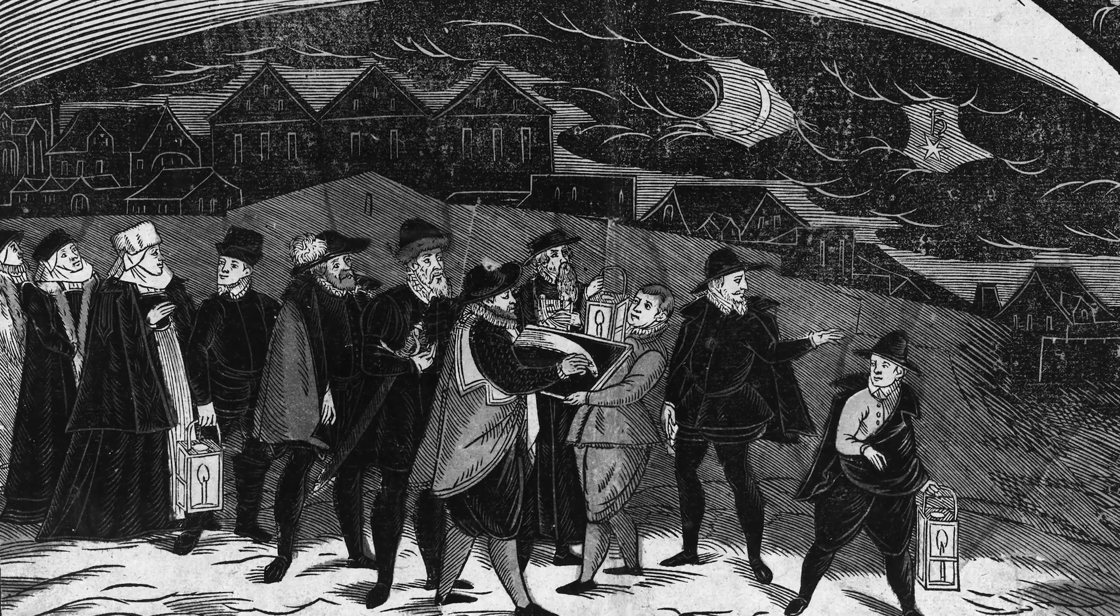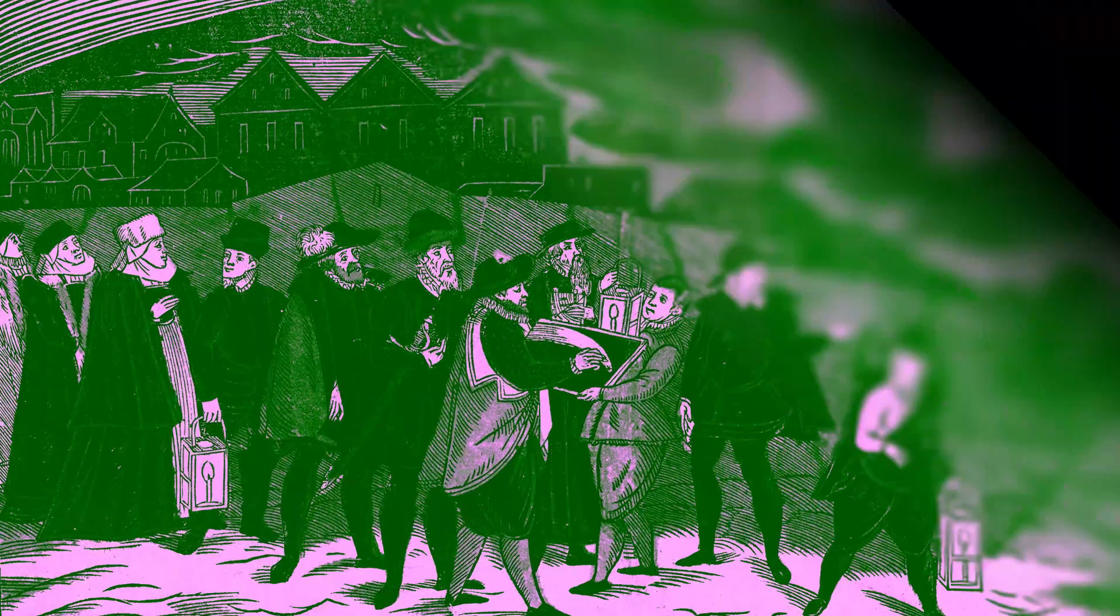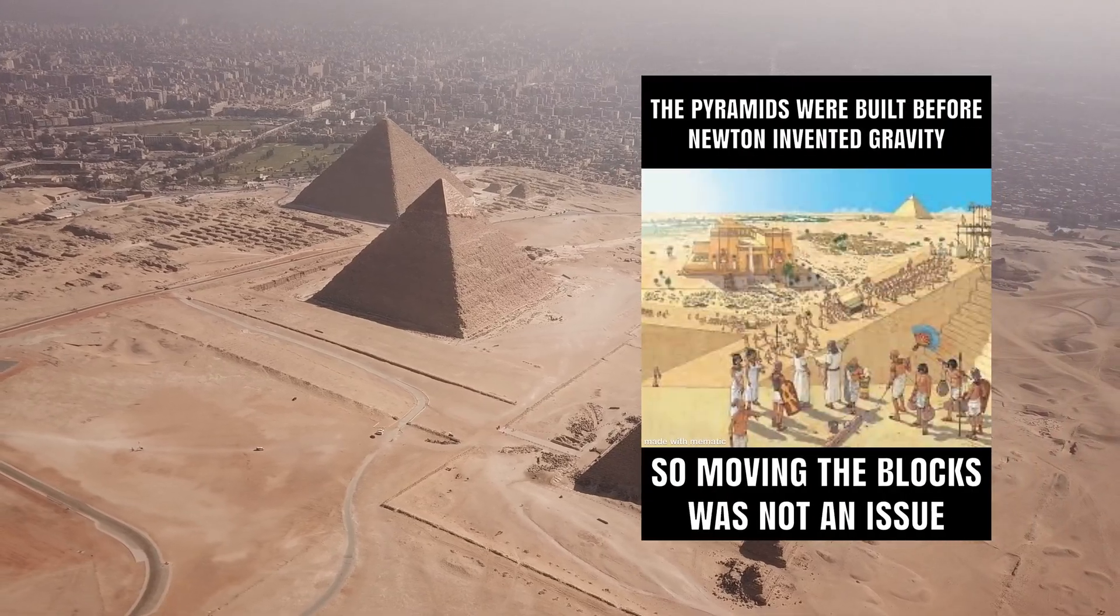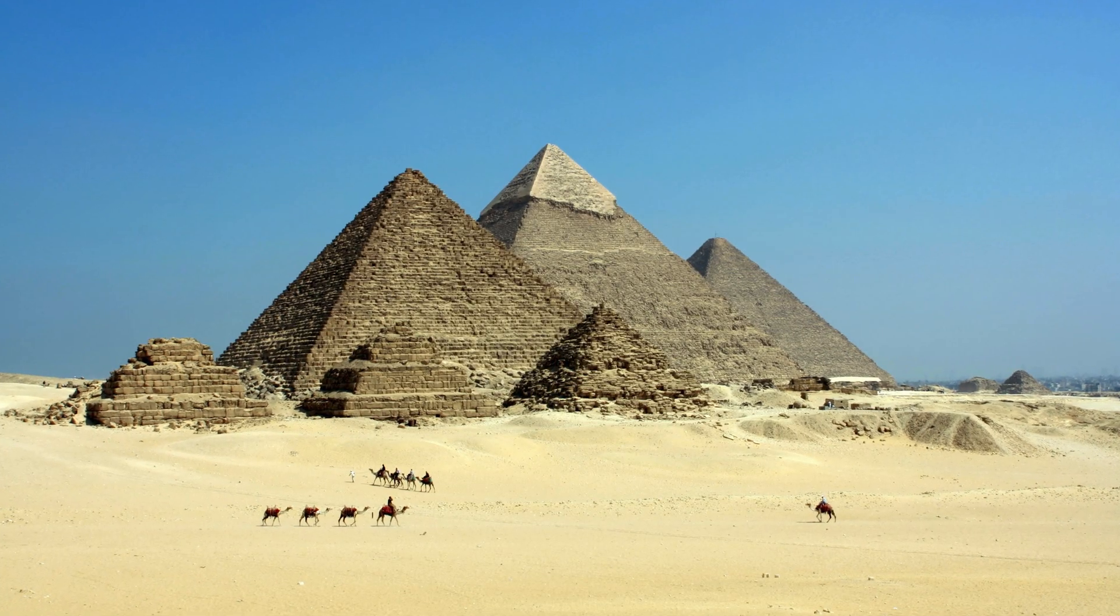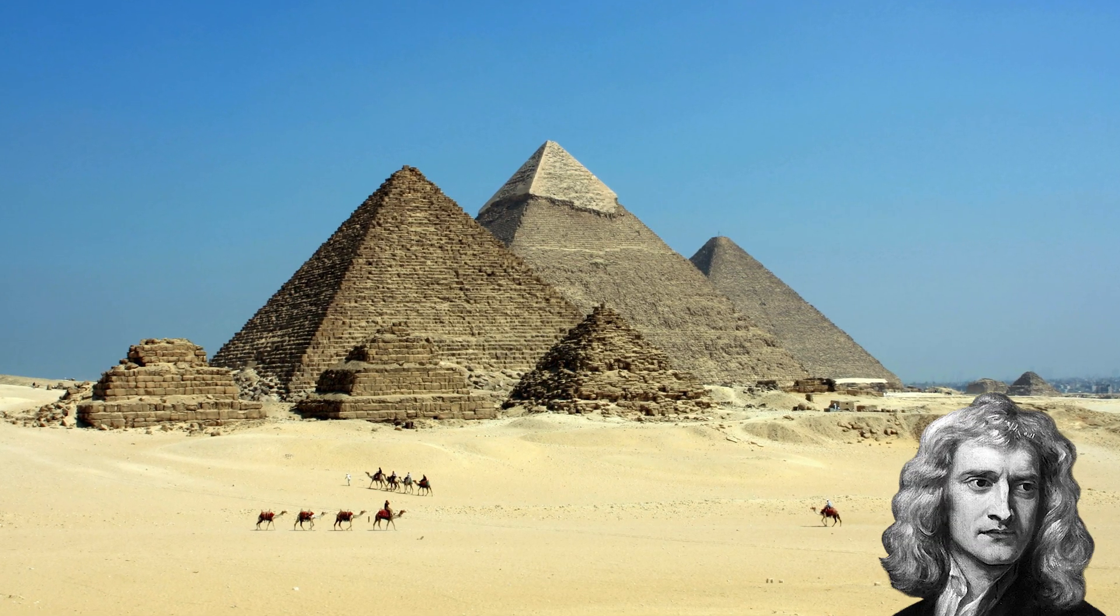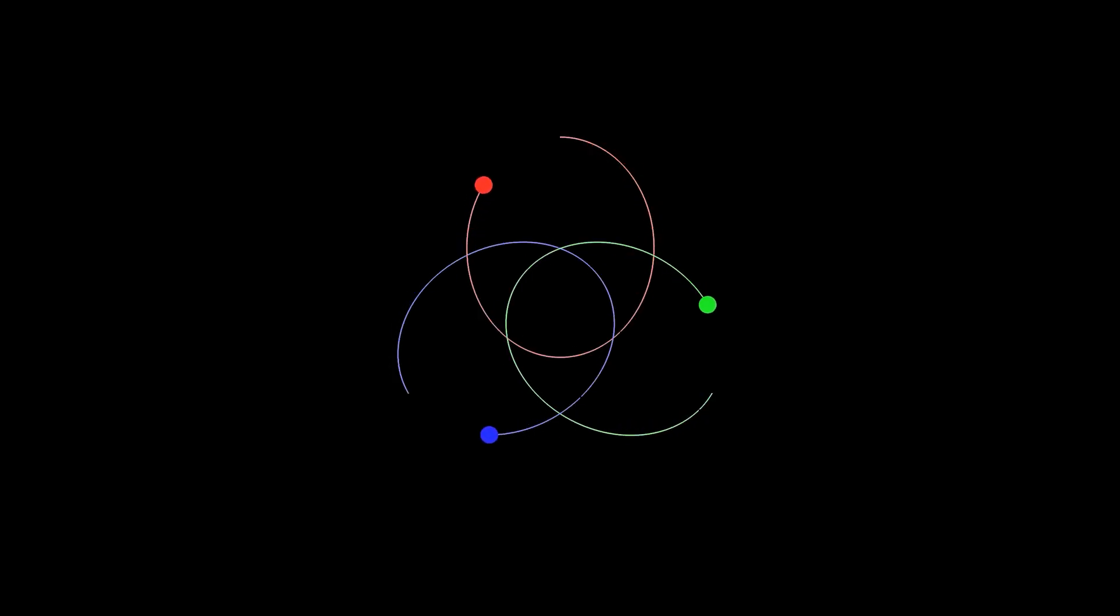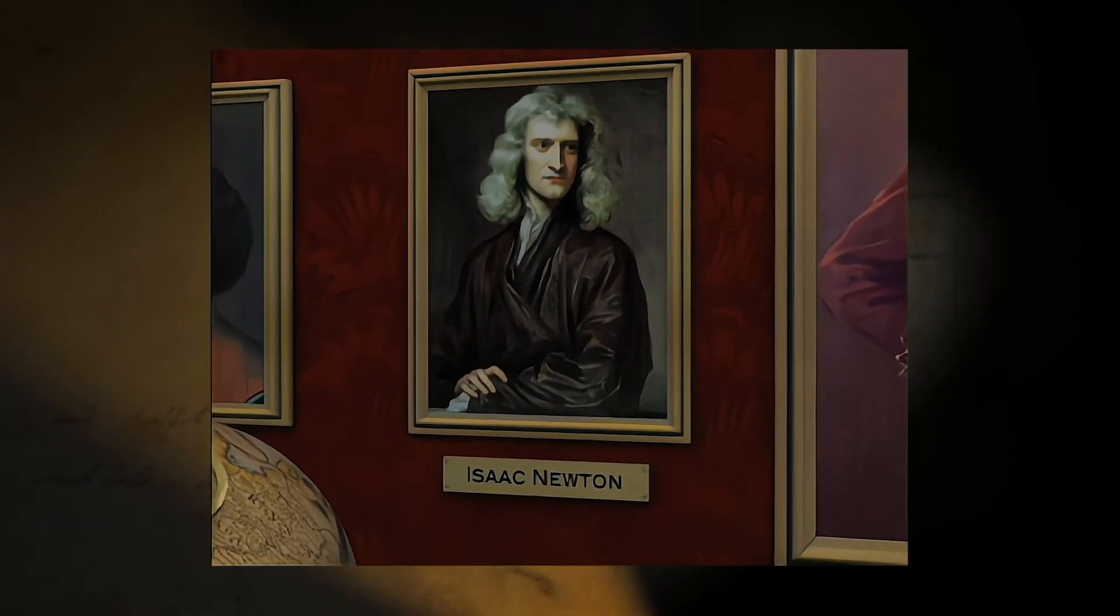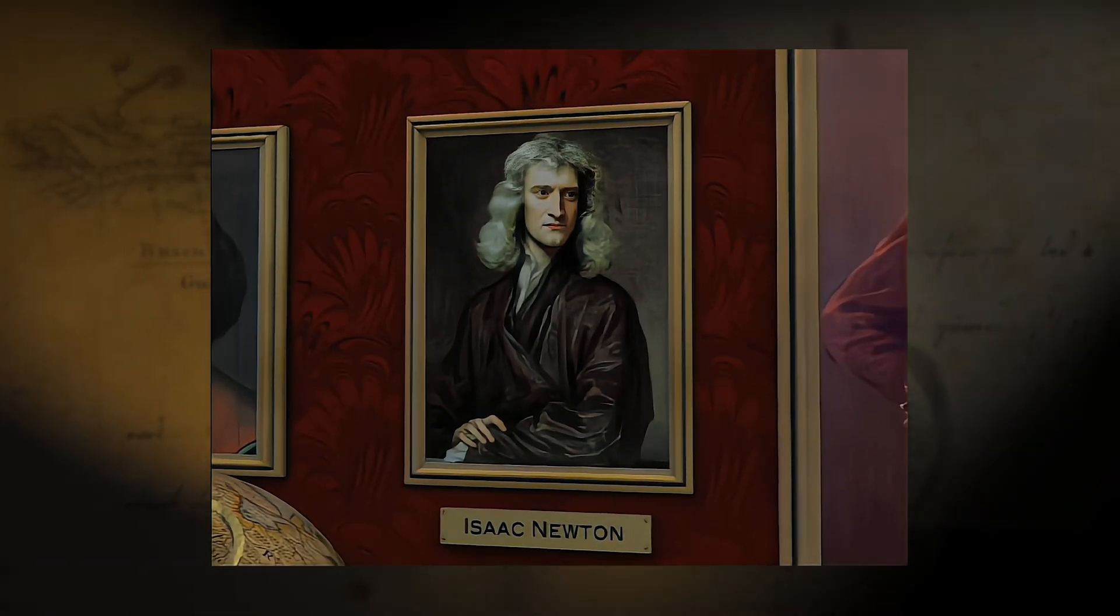The three-body problem dates back to the time when one of the most famous Englishmen invented gravity. In any case, the three-body problem emerged with the advent of classical mechanics and its application to the description of celestial bodies' motion.